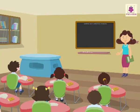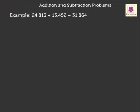Let us look at the first example: 24,813 plus 13,452 minus 31,864. Kids, here we will first add the two numbers and then subtract the third number from the sum of the first two numbers.